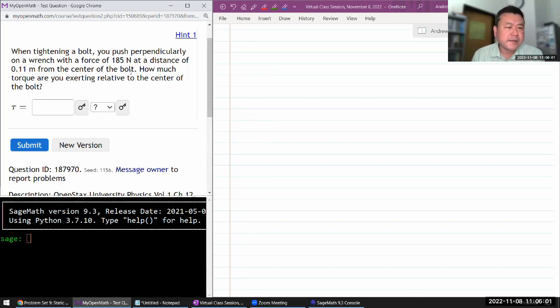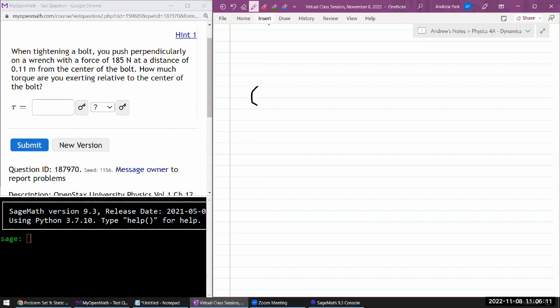This question says, when tightening a bolt, you push perpendicularly on a wrench with a force. Let me just diagram it to make sure I didn't miss anything. So there's some kind of bolt or something that you're trying to turn, and there's some kind of wrench over it. And it's saying that we push perpendicularly with some amount of force at a distance of 0.1 meter from the center of the bolt.